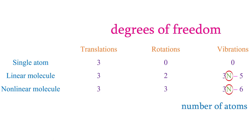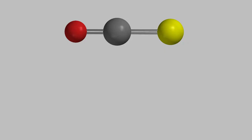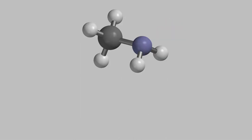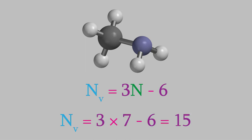For example, carbonyl sulfide is a linear molecule made of three atoms, so it can undergo 3n−5 vibrations, for a total of four altogether. On the other hand, methylamine is a nonlinear molecule made of seven atoms, so it can undergo 3n−6 vibrations, for a total of 15.